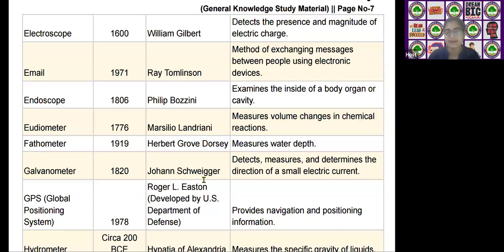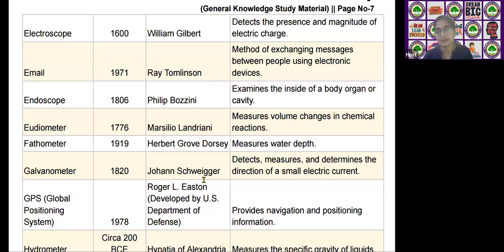The next scientific device is the galvanometer, invented by Johann Schweigger in the year 1820. It detects, measures, and determines the direction of a small electrical current.